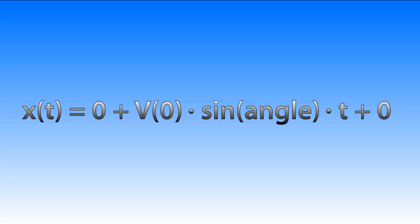So it becomes xt is 0 plus v0 times sine of the angle times t plus 0. It should be obvious that from this you can calculate xt pretty quickly because everything else is known.